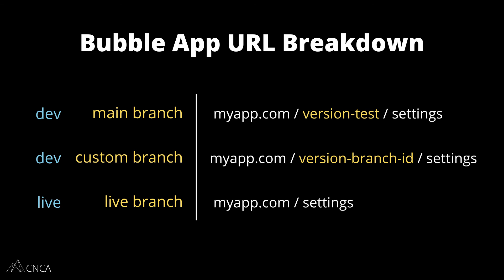Your Bubble application comes with two environments: development and live. When you preview pages in the development environment, you're going to see the words 'version-test' in the URL. If you're on a higher tier plan where you have the ability to create custom branches, you're also going to see the ID of those branches in the URL. Your live environment is not going to have anything extra added to the address of your pages.